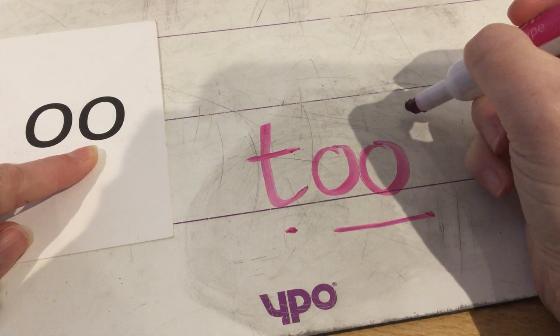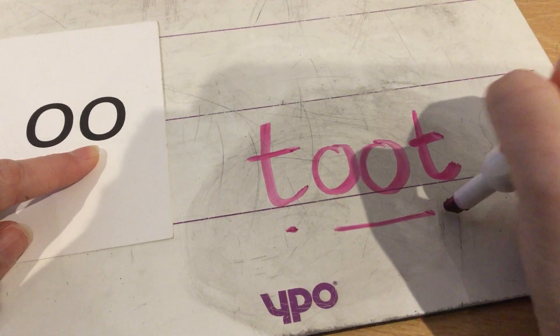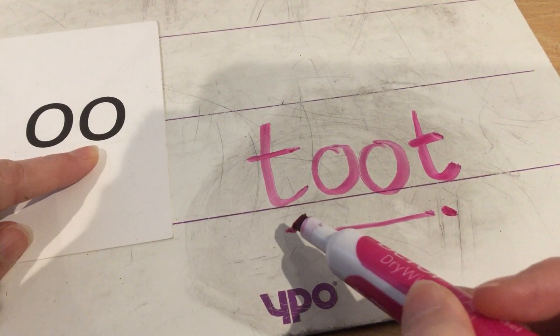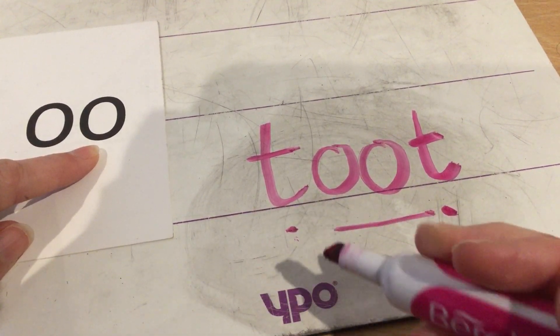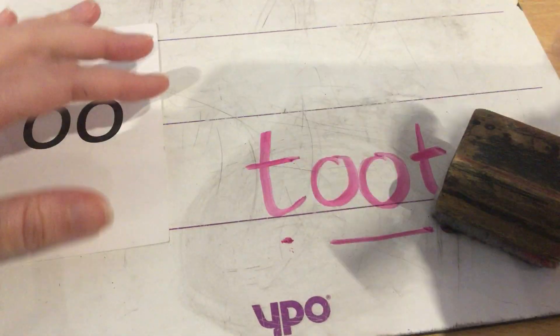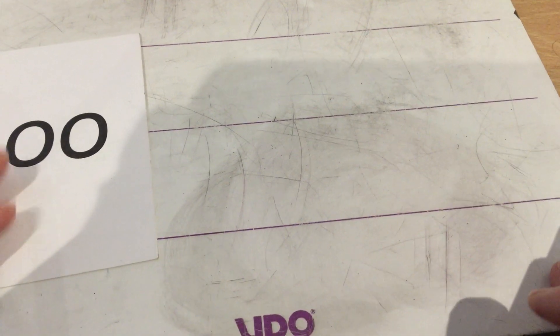I wonder if I put another T at the end. Shall we have a go at reading this one? T-oo-t. Toot. Bit like a car going toot toot. Okay. I wonder what other sounds we could add on the end of T-oo to make new ones. I wonder if any of you can make new words starting with T-oo.